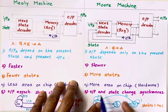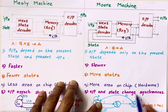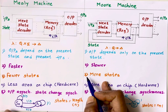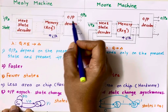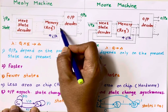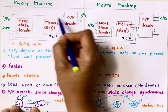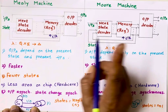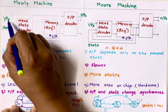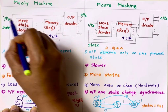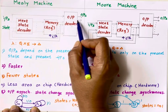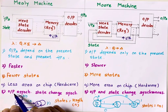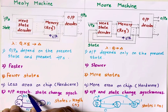So in a Moore machine, output and state change are synchronous. Whereas in a Mealy machine, output depends on present state as well as present input, so output change is not synchronous to clock — it is asynchronous. Whenever input changes, output will change without waiting for the clock.